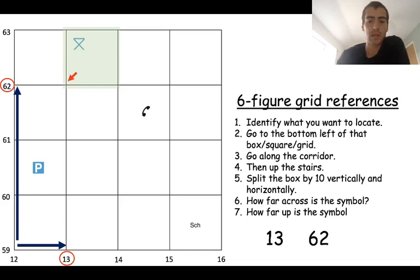But now we need to add the numbers at the end. So we'll split the box vertically and horizontally. The picnic bench is about three across. So it'll be one, three, three.